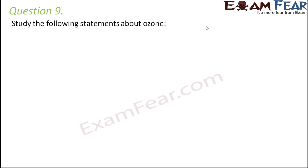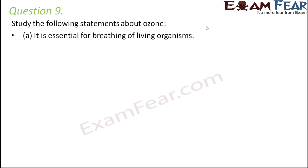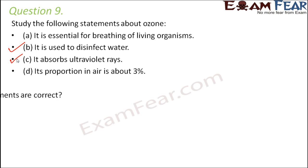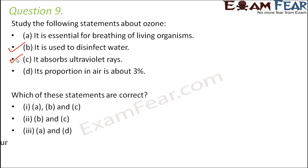Question number 9: Study the following statements about ozone. Statement A — it is essential for breathing of living organisms: not true, we need oxygen for breathing. Statement B — it is used to disinfect water: yes, that is true. Statement C — it absorbs ultraviolet rays: yes, that is also true. Absorbing UV rays is ozone's most unique property. An ozone layer surrounds our atmosphere and protects us from the harmful ultraviolet rays of the sun, which can cause diseases like skin cancer. Statement D — its proportion in air is about 3%: not correct. So statements B and C are correct, making the second option the right answer.